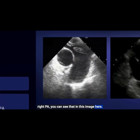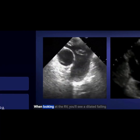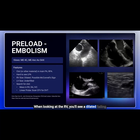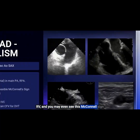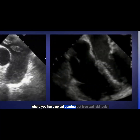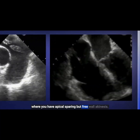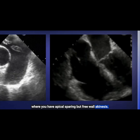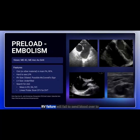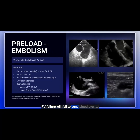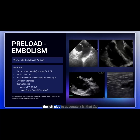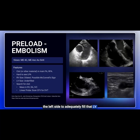You can see that in this image here. When looking at the RV, you'll see a dilated failing RV and you may even see the McConnell sign, where you have apical sparing but free wall akinesis. The LV will be underfilled because the RV failure will fail to send blood over to the left side to adequately fill that LV.